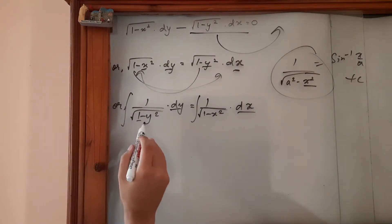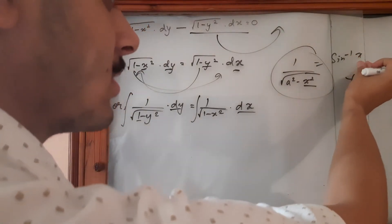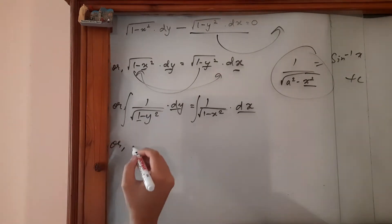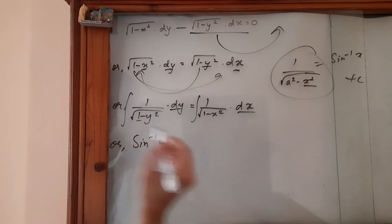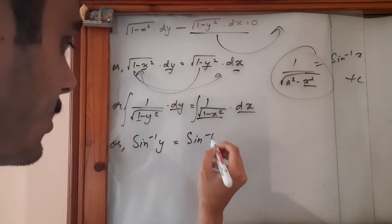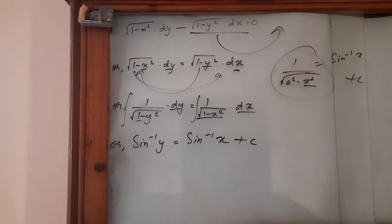So over here y is taken as x and a is 1, so we can simply write it as sin inverse y. So, or what we can do is sin inverse y is equal to... So similarly, this would be sin inverse x plus c, the integration constant.